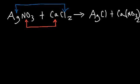The next step is to balance the equation. Notice that we have two nitrates on the right side, so we put a 2 in front of AgNO₃. We also have two chloride ions on the left, so we put a 2 in front of AgCl. The reaction is now balanced. Our next step is to write the phases of every substance.